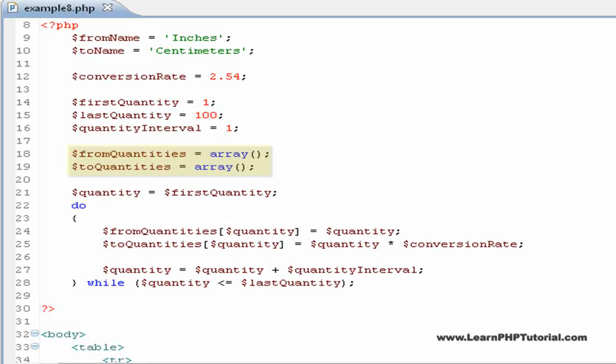From quantities and to quantities are first initialized to empty arrays. This is so that these variables are initialized before we try to write to the elements within. Here, we're using a single do-while loop to initialize both the from quantities and to quantities arrays. As we mentioned before, this kind of loop is often used with a loop counter.